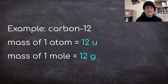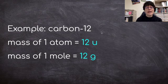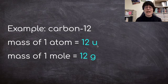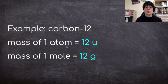So for example, carbon 12. The mass of 1 atom of carbon 12 is 12 atomic mass units. But now we also know that the mass of 1 mole is 12 grams. It's the same number, but just a different label. So 1 atom is 12 atomic mass units. 1 mole is 12 grams.